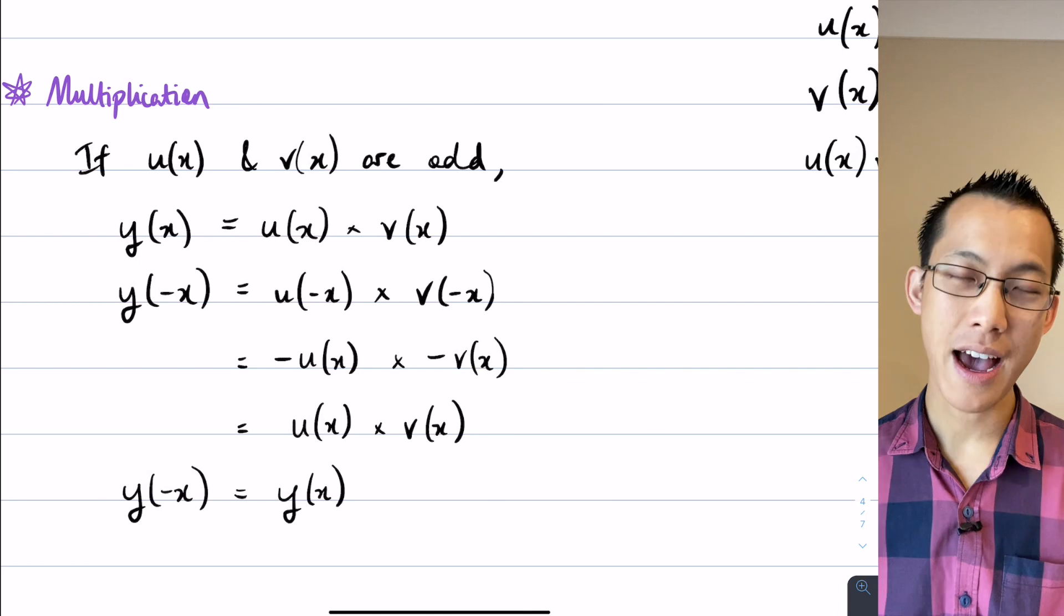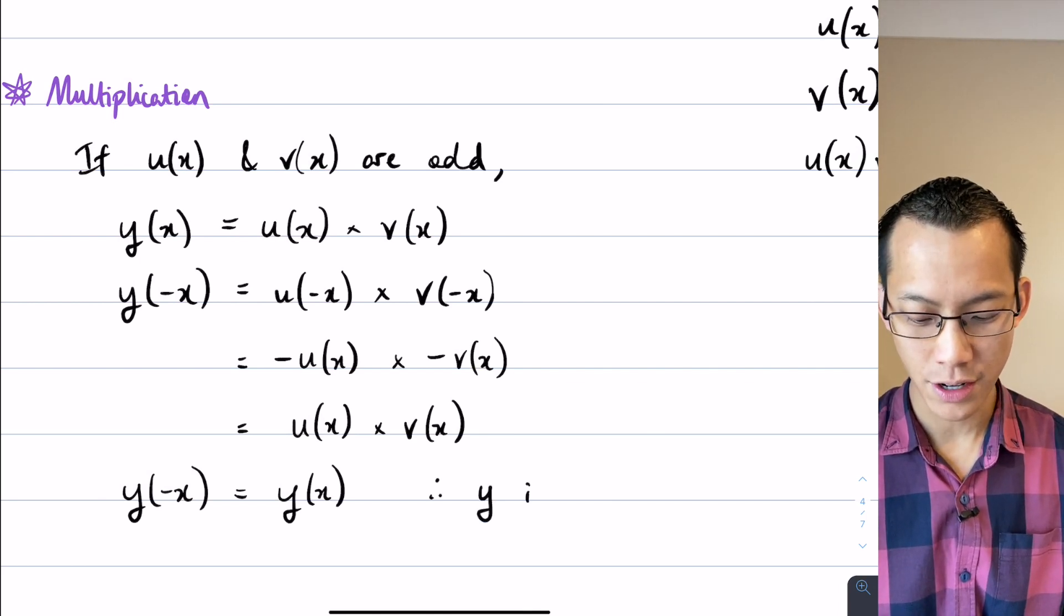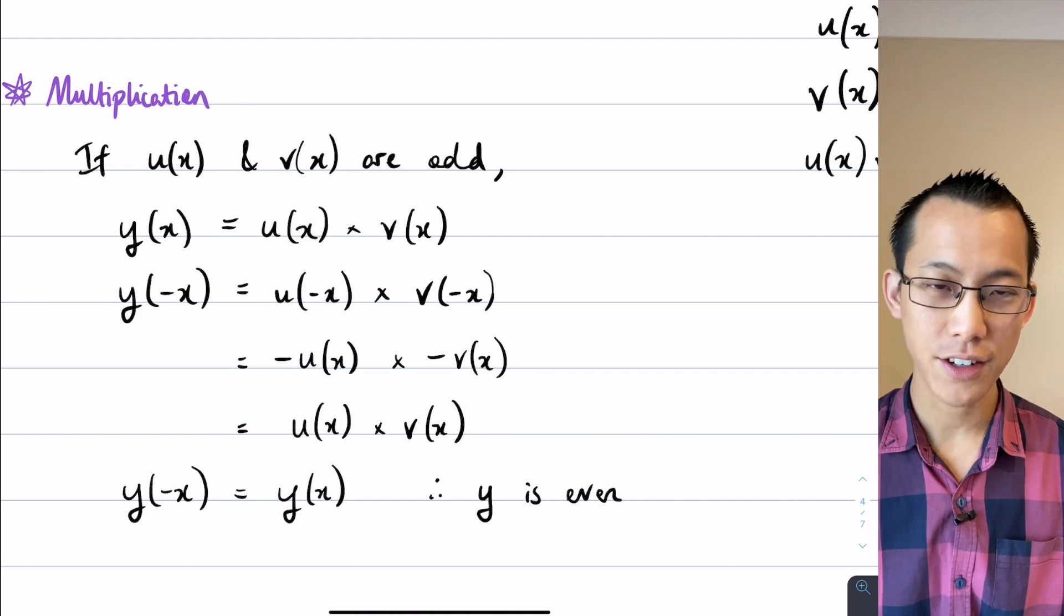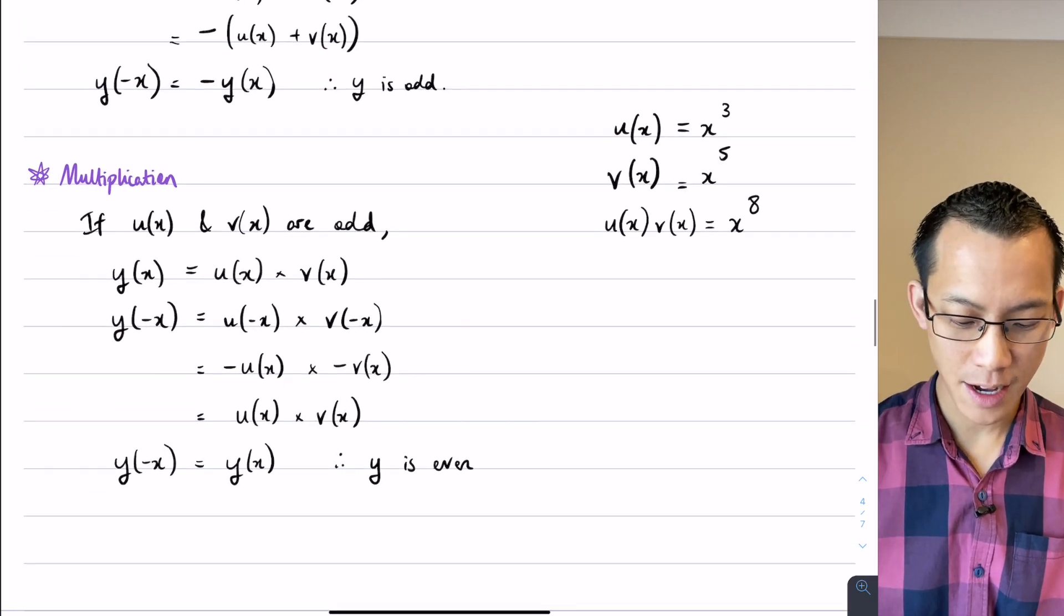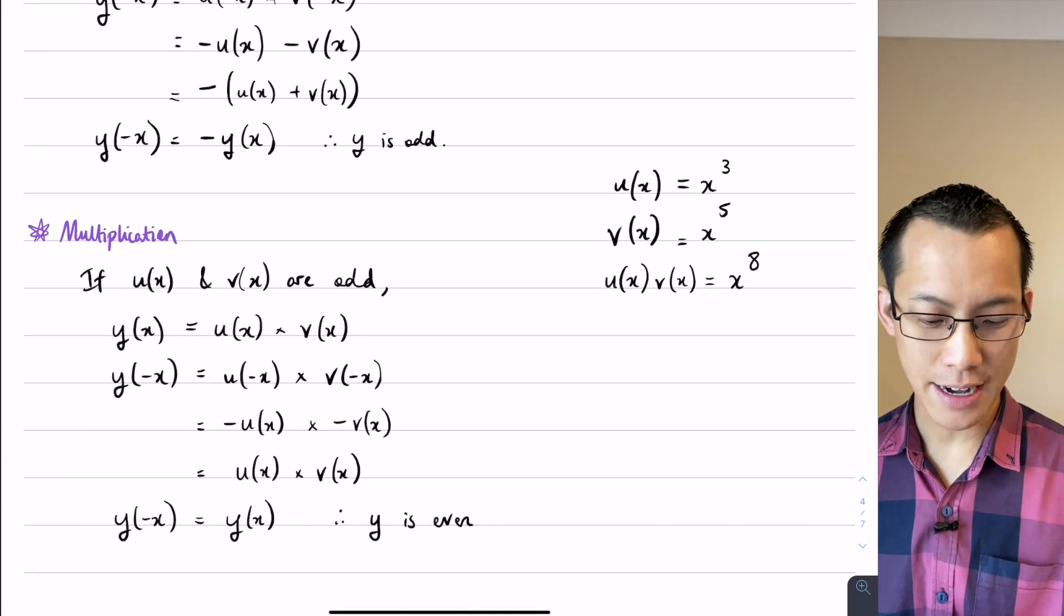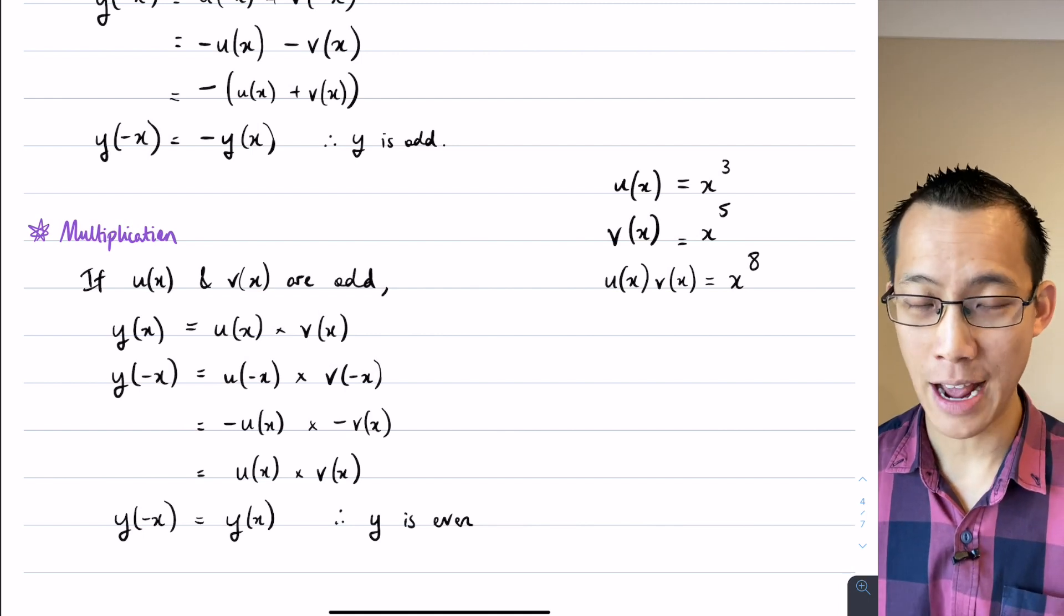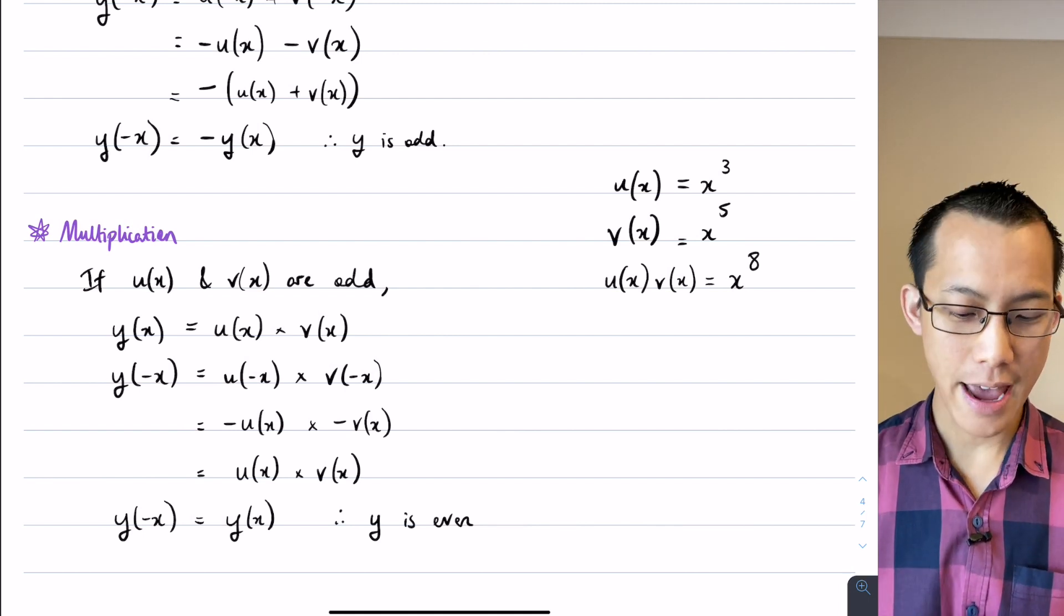That's a y of negative x on the left hand side, y of x on the right hand side. So this is the algebraic definition of an even function. Okay, now the last example I'm going to give to you before we look at derivatives is, well what happens if I don't have two odd functions, or two even functions. I'll let you prove what happens when you've got one of those. What if they are different?